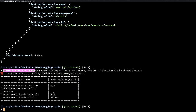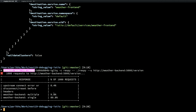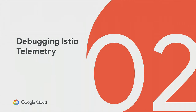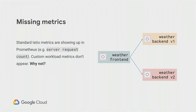Moving on to the next demo: debugging telemetry. As a quick recap on how Mixer works: the Istio proxy inside your pod sends telemetry and metrics to Mixer, a control plane component, which then forwards that to the backend of your choice — Prometheus, Stackdriver, Datadog, etc. The problem today is that custom metrics aren't showing up in Prometheus. The Mixer configuration is hilariously complicated, so let's figure out what's wrong.